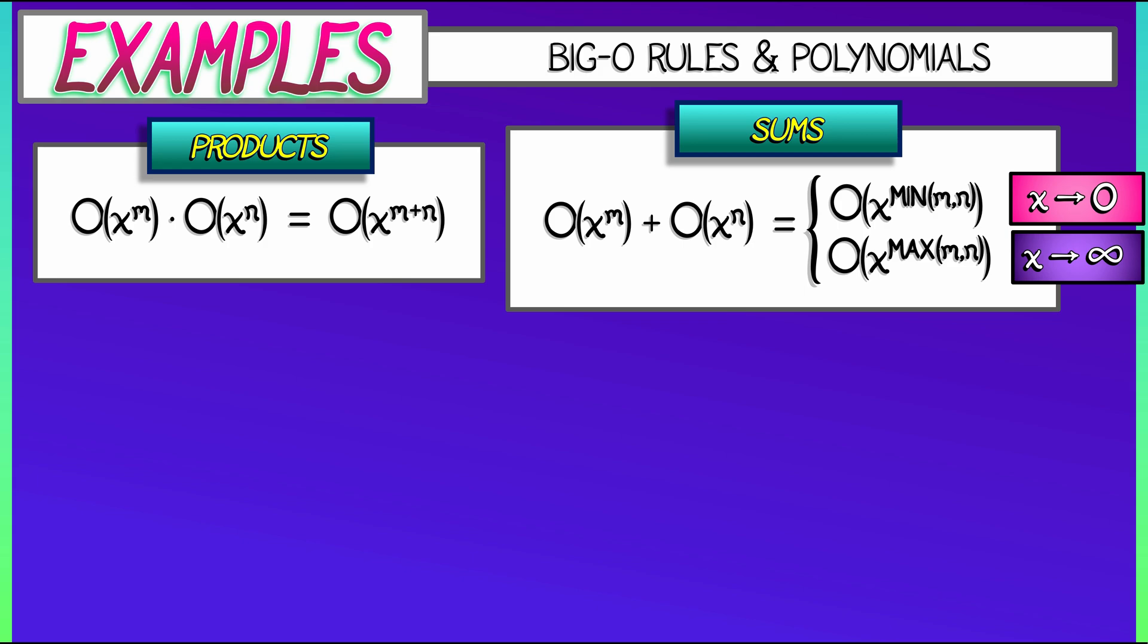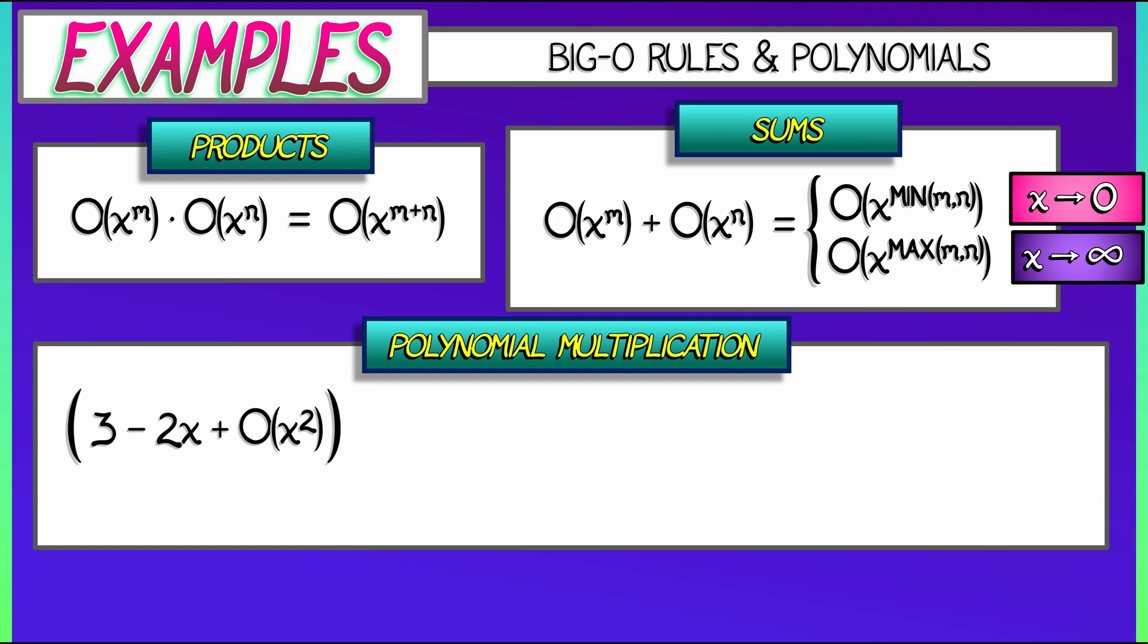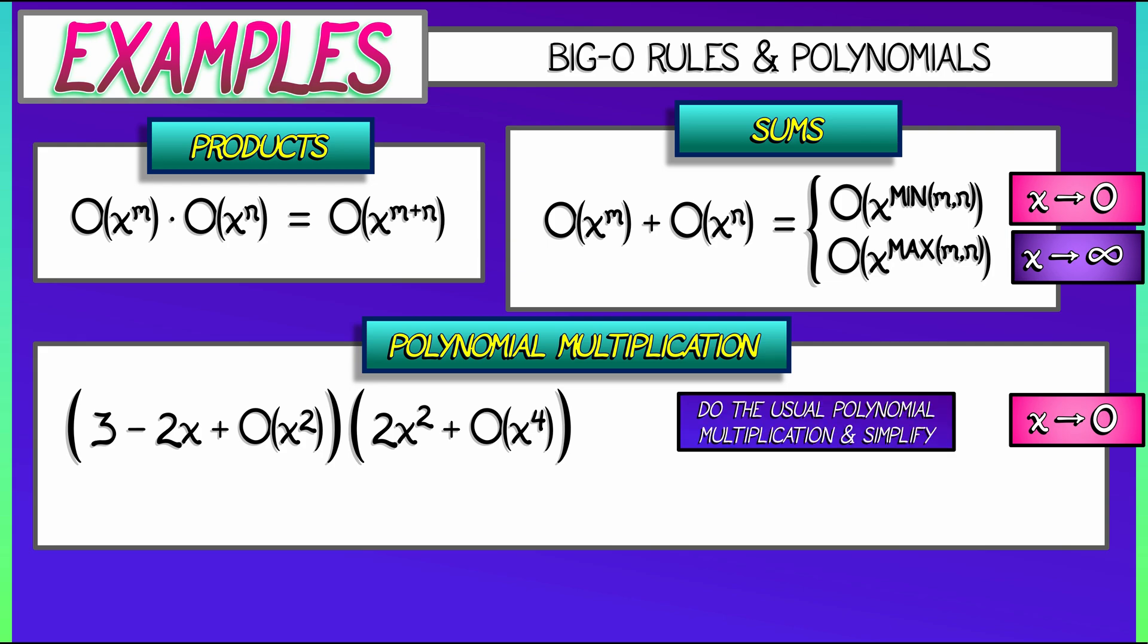So now, what we can do is put it all together and start working with some polynomials. Let's say we have a function of the form 3 minus 2x plus Big-O of x squared, and we multiply it by something of the form 2x squared plus Big-O of x to the fourth. Let's be careful, we're working in the limit as x goes to zero. How do we expand and simplify this? Just do the usual polynomial multiplication and simplify using the above rules.